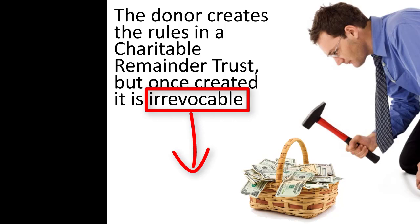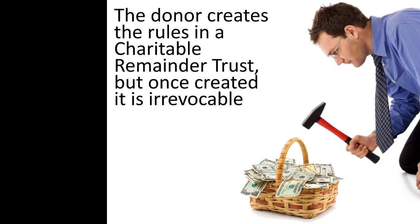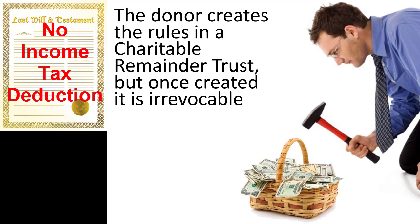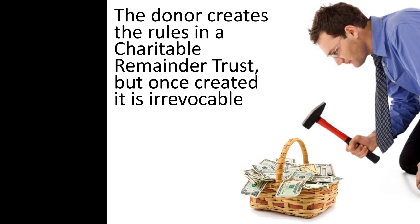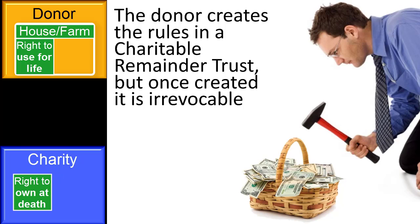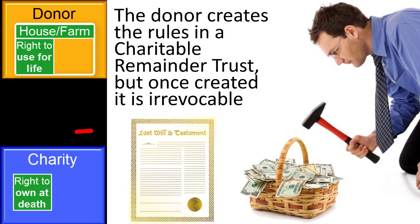Irrevocability also allows the donor to take a tax deduction for his or her transfers to the trust. A donor receives no income tax deduction for having a charitable beneficiary in his or her will because the donor could, at any point, remove all charitable beneficiaries. In contrast, when the donor transfers a remainder interest with retained life estate in a home or farm to a charity, the donor can take an immediate tax deduction, even though the charity will not become full owner of the property until the death of the donor. The key difference is that the will is revocable and the transfer of a remainder deed is not.